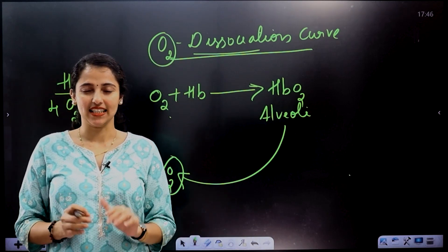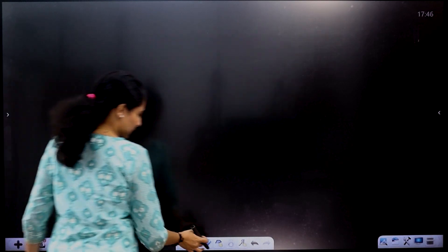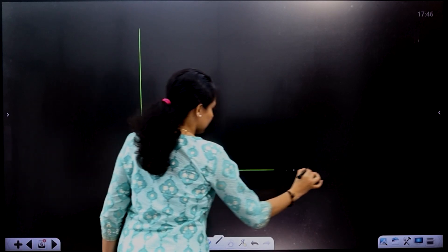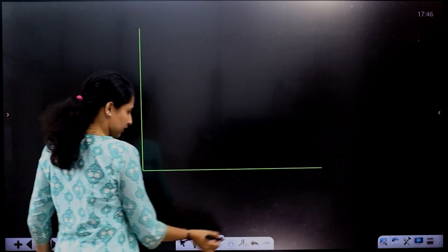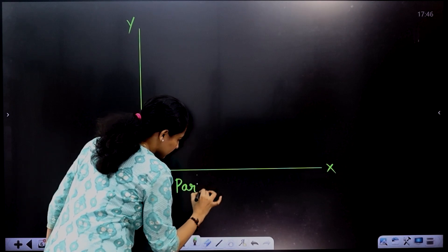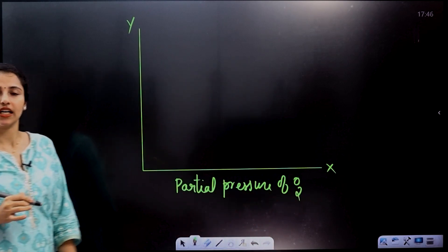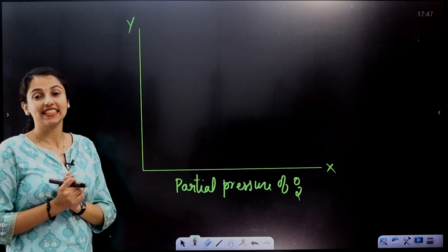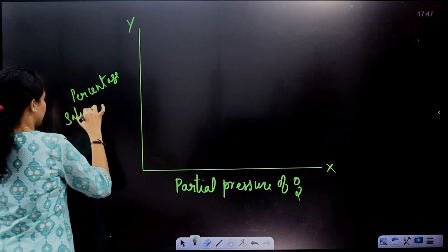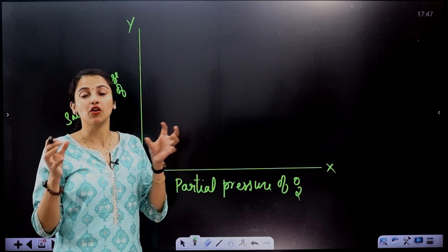This is how we construct the oxygen dissociation curve. On the x-axis we have partial pressure of oxygen, and on the y-axis we have percentage saturation of hemoglobin.